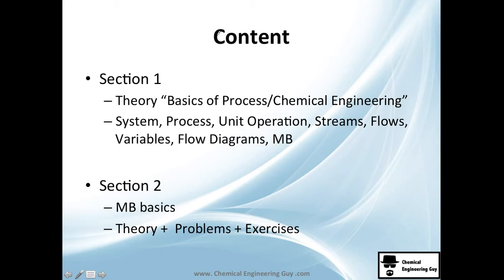Essentially we're going to see two sections. Section number one is theory — basic processes in chemical engineering — and a lot of concepts such as system, process, unit operations, streams, flows, variables, process variables, flow diagrams, block diagrams. We're also going to see why we need to do mass balances, especially in chemical engineering. This is theory, so it's just read the definition and understand it.